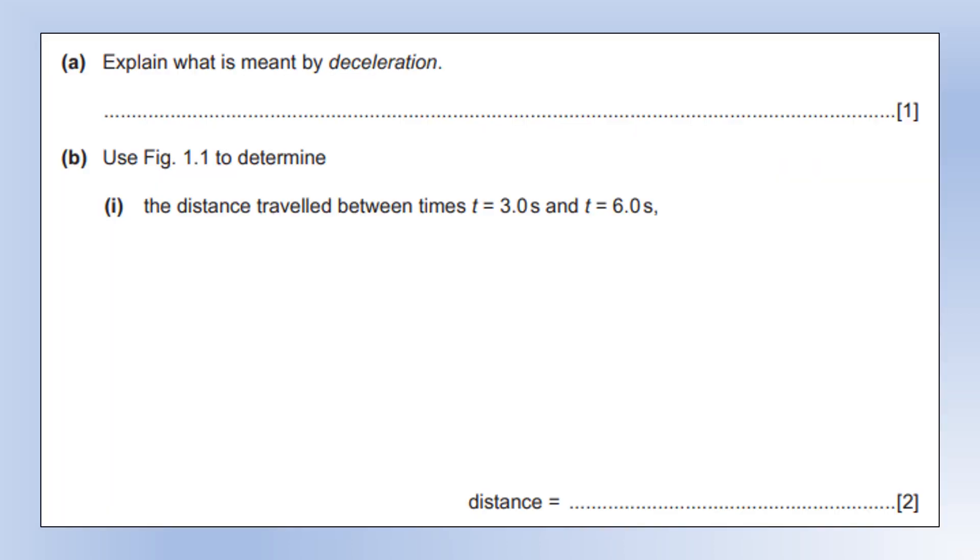So what is meant by deceleration? It means the rate of decrease of speed. It tells you that the speed of the object is decreasing over a period of time. Just to quickly flag this up, deceleration is not the same as negative acceleration. The negative sign in acceleration tells you the direction of the acceleration, it doesn't actually tell you whether the speed is increasing or decreasing.